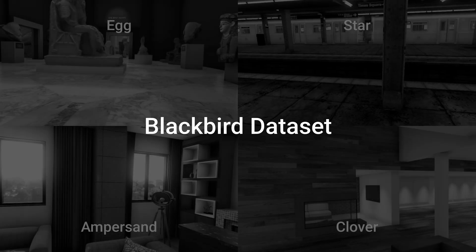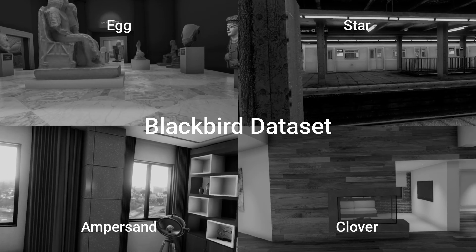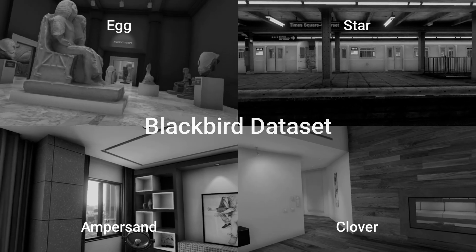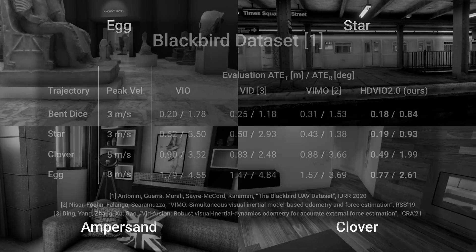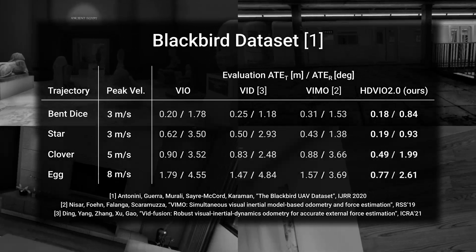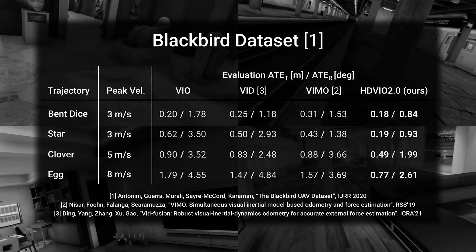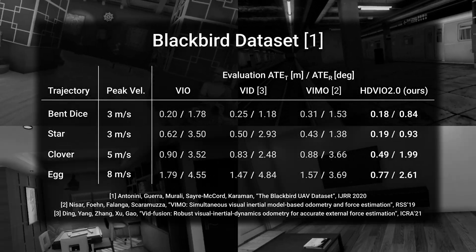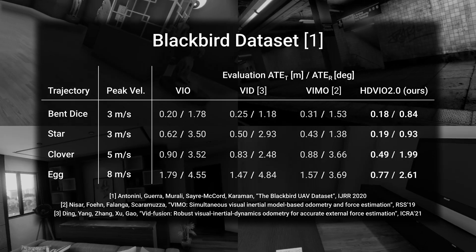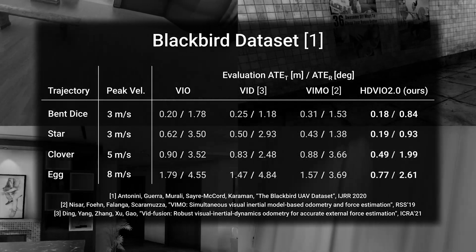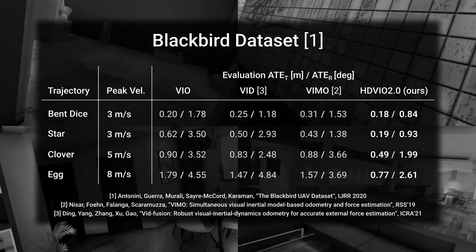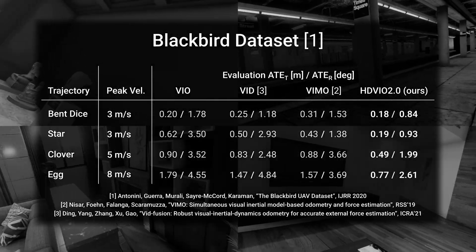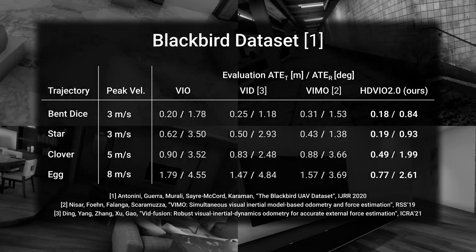In terms of trajectory estimation, our method outperforms the visual-inertial and visual-inertial model baselines on the Blackbird dataset, which contains diverse trajectories at medium speeds. Compared to the baselines, the largest improvements are in the faster trajectories, where the camera motion and rapid yaw changes make the tracking of visual features challenging.